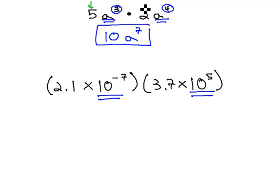First, we multiply the numbers like we did before with 5 times 2. So what we'll do is 2.1 times 3.7. 2.1 times 3.7 is 7.77.